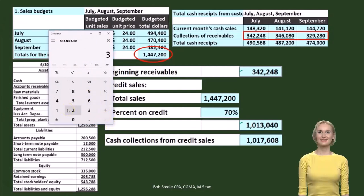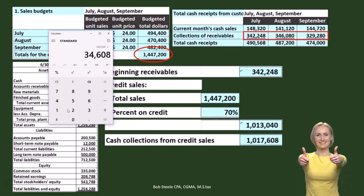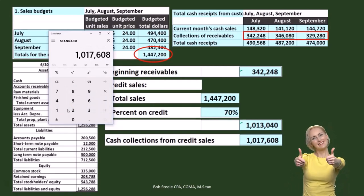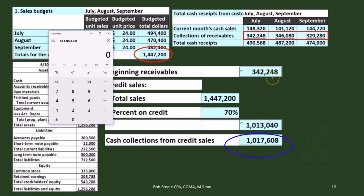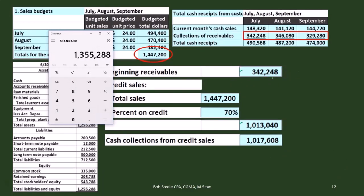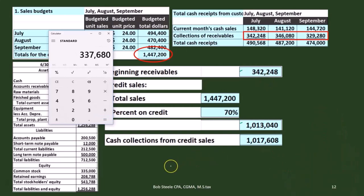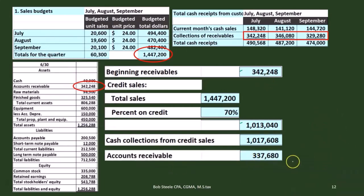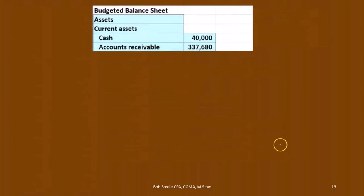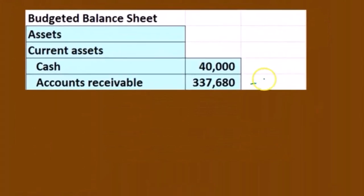So the calculation is: beginning balance of $342,248 plus credit sales of $1,013,040, minus cash collections of $1,017,608, which gives us an ending accounts receivable balance of $337,680. That's our ending receivable on the budgeted balance sheet.